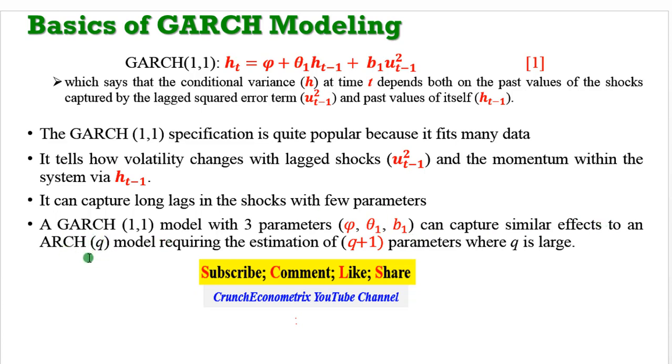As emphasized before, the GARCH(1,1) model has just three parameters to estimate, and this will capture similar effects to an ARCH(q) model—that is, an ARCH model with infinite lag structure, which would require you to estimate q+1 parameters, where q is very large. A model with three parameters, like a GARCH model, can sufficiently capture similar effects that an ARCH(q) model will attempt to capture. This tells you that parsimonious models have better predictions than over-parameterized models.